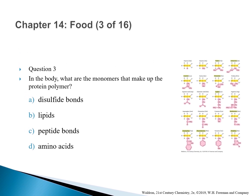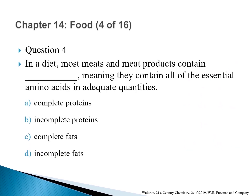Question 3: In the body, what are the monomers that make up the protein polymer? The correct answer is D — amino acids. Amino acids are small organic molecules that connect together to form long chain-like protein polymers.